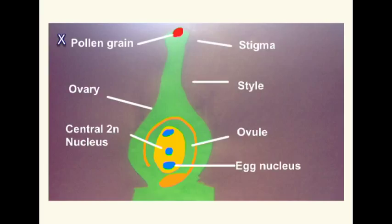A pollen granule containing the gamete sticks to the end of the stigma. Its genetic information must pass down the style and into the ovary. It then needs to go to the ovule and ultimately to the egg nucleus, but it also needs to go to a central diploid nucleus.